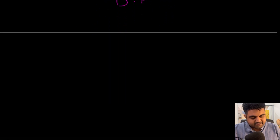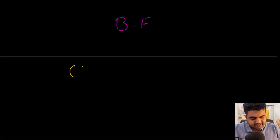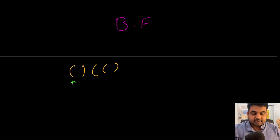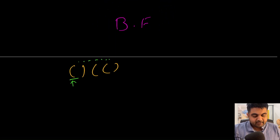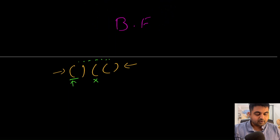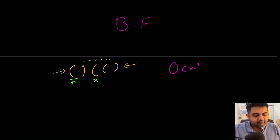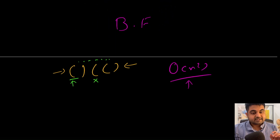Now the brute force approach is to do the most simplistic thing possible, where we simply check for every single substring starting from any particular position, and find the longest substring until we encounter some invalid substring. This approach would work fine and generate the result, but the issue is it would operate in O(n²) time. So we need to find some way to shorten this calculation.